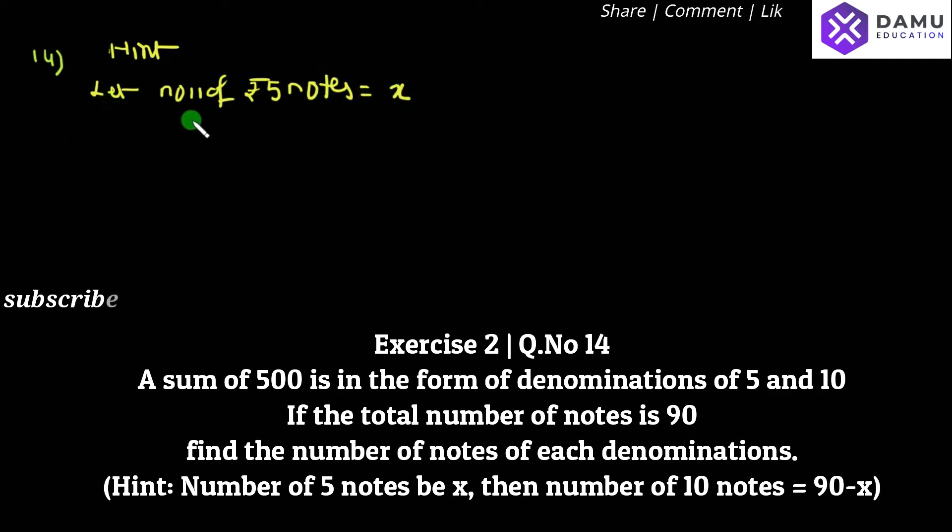Like that, the number of 10 rupee notes will be equal to 90 minus x. Why 90 minus x? Because the total denominations will be equal to 90. There are 90 notes total.